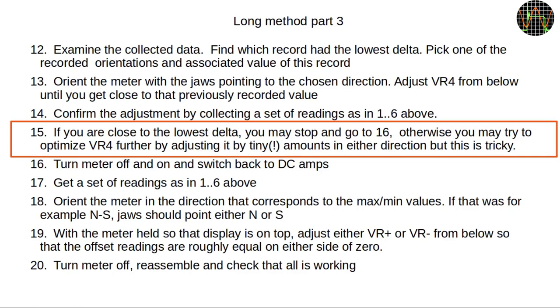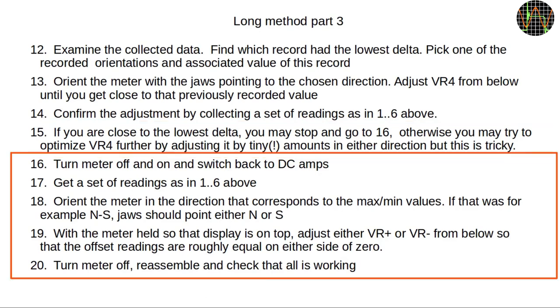Step 15 is really only for people with very steady hands and nerves of steel. I don't think it is really worth the effort and the errors introduced by even slight changes in orientation between measurements probably make this a lost cause. The rest of the steps are for the VR plus and VR minus adjustment and they are identical to the short procedure so I won't cover them again.